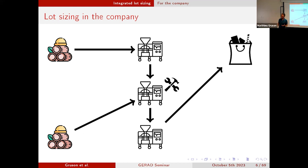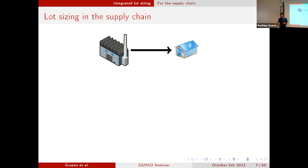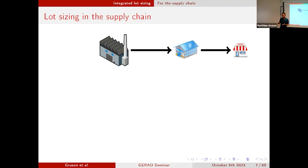We can go further and take the point of view of the supply chain. If I take that view, I consider a manufacturing plant where production takes place, and then the items are sent to some warehouses. We have transportation decisions to make along with the production decisions, because we cannot transport something that hasn't been produced. Maybe those items are then sent from warehouses to different retailers, so we consider several levels of the supply chain and integrate all decisions at once to minimize total supply chain cost.